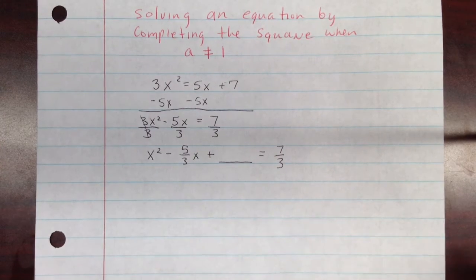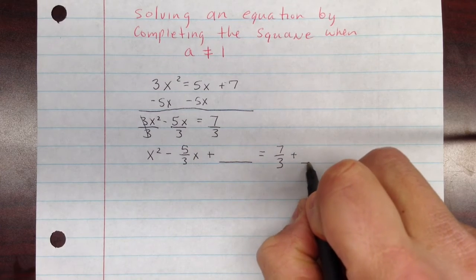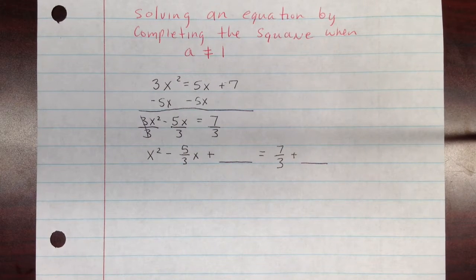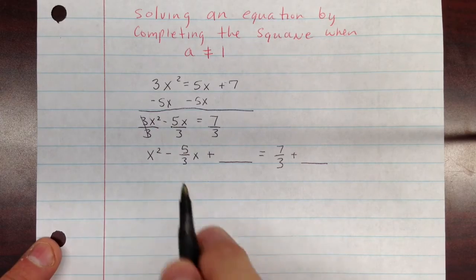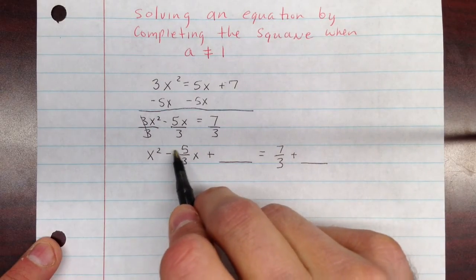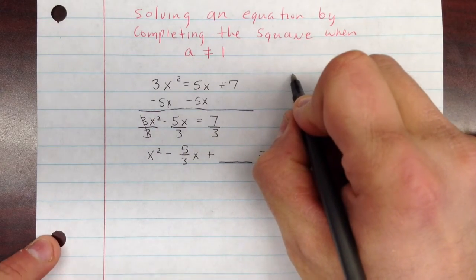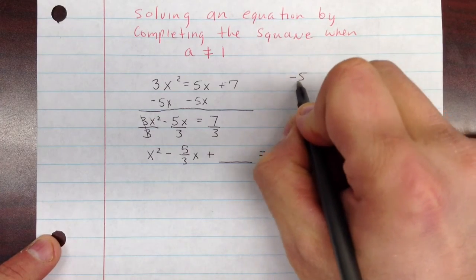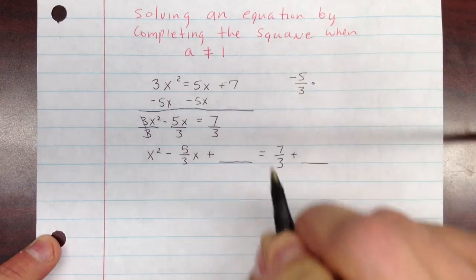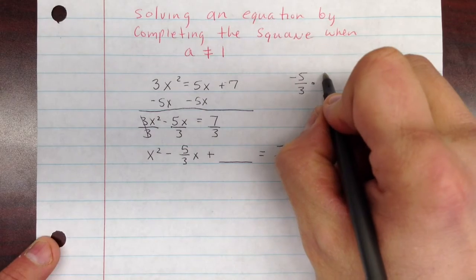The blank, of course, is because we're going to be adding something to both sides. And that's going to be what we find with the completing of the square. So to do that, we're going to take b, which is negative 5 thirds. Take negative 5 thirds. Divide it by 2, which is the same as taking it times a half.